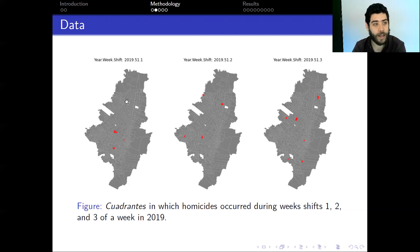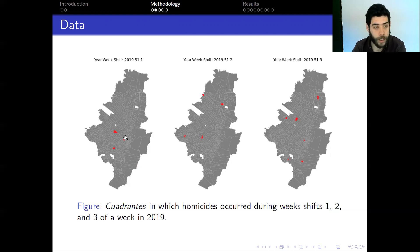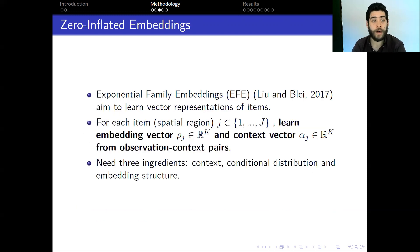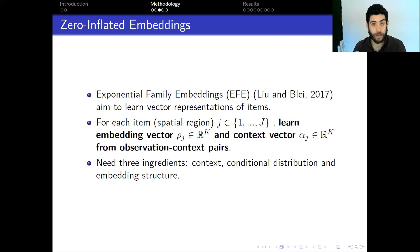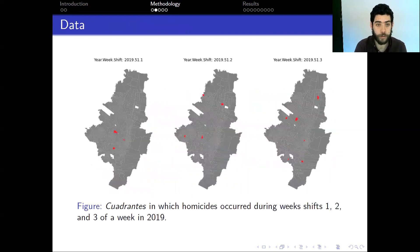The gray area is Bogota and the white lines show the division of these cuadrantes. You can see that they vary greatly in size, with rural cuadrantes being larger than cuadrantes in downtown and other important areas of the city. With this in mind, we use a methodology proposed by Liang and Blei in 2017 called Exponential Family Embeddings, which aims to learn vector representations of items — in our case the spatial regions, each cuadrante of the city.